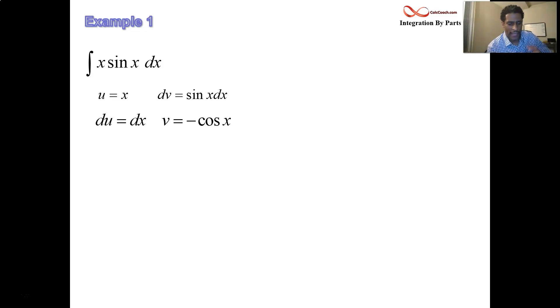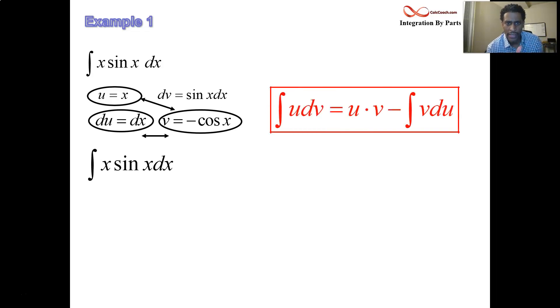The formula has us putting together these terms in the following way. We have the product of u and v minus the integral of the product of v and du. Our original integral, using this formula, can be transformed into the product of u and v, negative x cosine x minus the integral of v du minus the integral of negative cosine x dx.